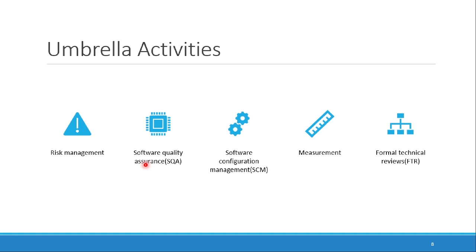Then we have software configuration management, certain measurements, and formal technical reviews. In formal technical reviews, you have a software and different technical persons from the domain give their feedback — what needs to change, what is good, what they did not like. These technical reviews happen at multiple levels. This is an introduction to software engineering course, so we will only be covering the introductions and not going into in-depth details of all of these.